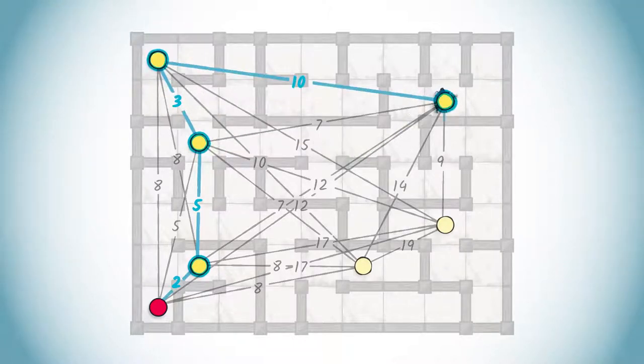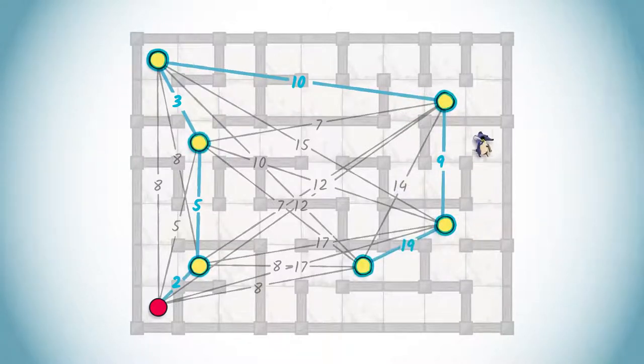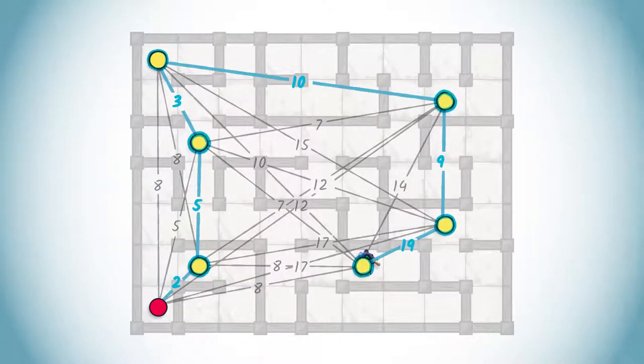Once the two players have chosen their strategies, the game can be entirely known and the winner can be identified by letting the game play out. As such, a play can be seen as a walk in the arena, depending on the two chosen strategies. In the next lesson, Patrick will show you how to compute good strategies.